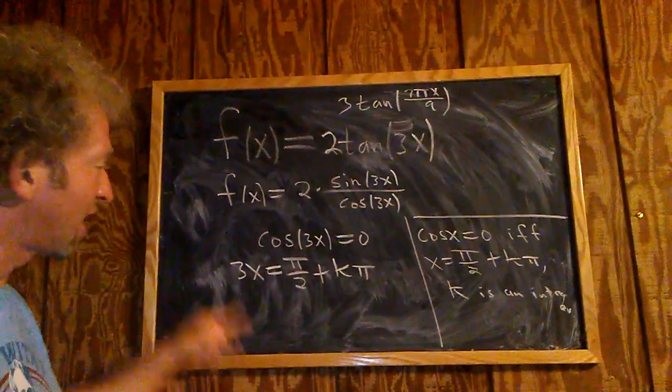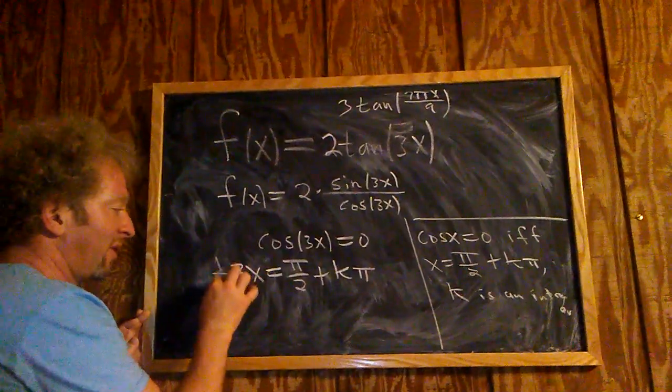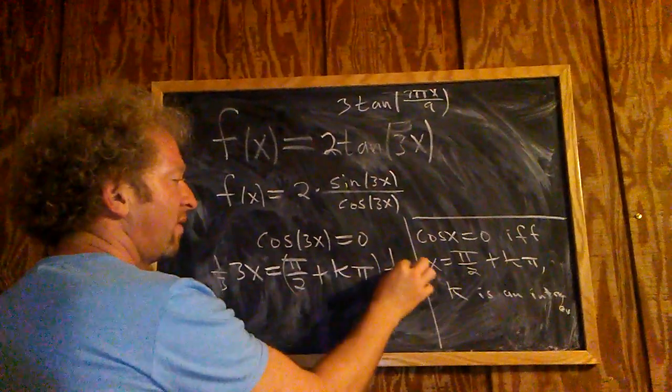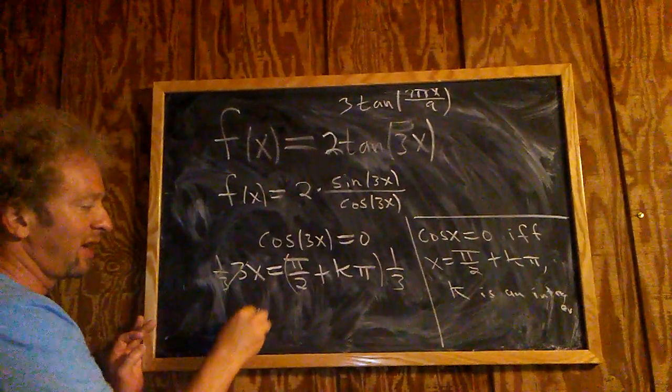So we're here. All you do now is just multiply by one-third to solve for x. So one-third... one-third. These cancel. So you get x equals. Let's be really careful here.